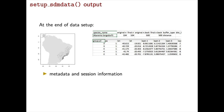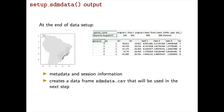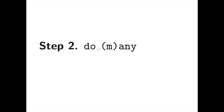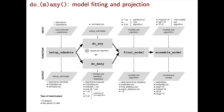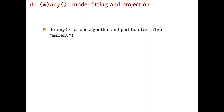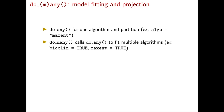We also record metadata and session information, and the sdmdata.csv file is used in the next step: fitting the algorithms. For one algorithm use doOne, for multiple algorithms use doMany. If you call doOne, you specify the algorithm you want. For doMany, you specify which algorithms to run on a true/false basis. This looks a lot like Biomod2. The parameterization for each algorithm is inside the function, and while MaxEnt has many parameters that should be considered, for now we have a simpler parameterization.